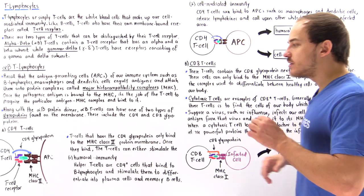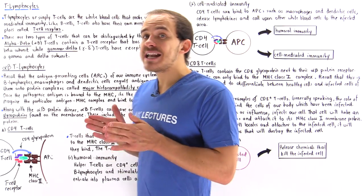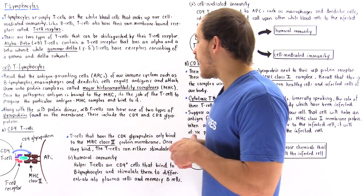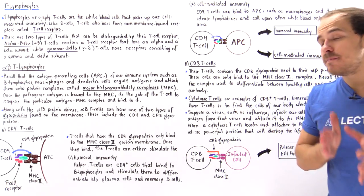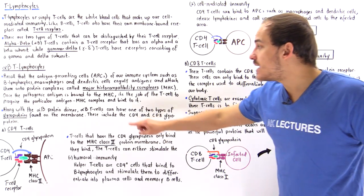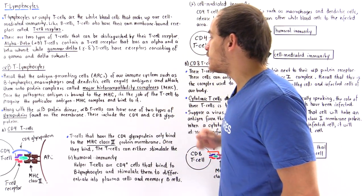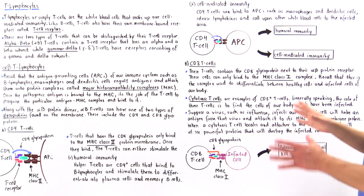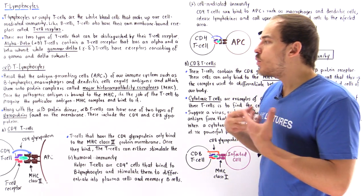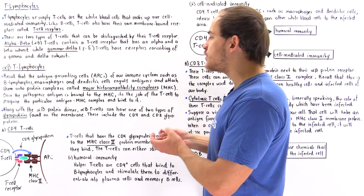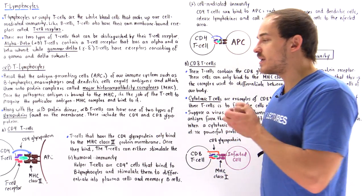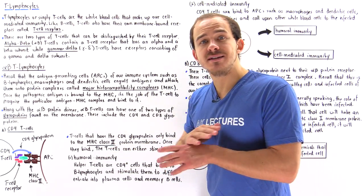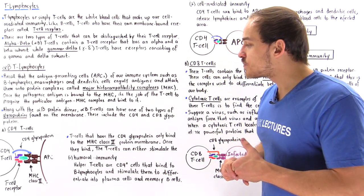It turns out that T cells that have CD4 glycoproteins can only bind onto the major histocompatibility complex class II. As we'll see in just a moment, we also have a major histocompatibility complex class I, which these CD4 glycoproteins cannot actually bind to.